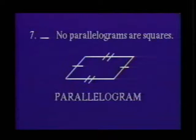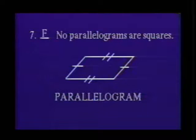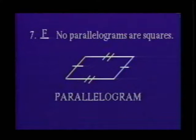Number seven: no parallelograms are squares. The answer to number seven is false. Some parallelograms are squares, since a square is a rectangle with equal sides and a rectangle is a parallelogram with right angles.